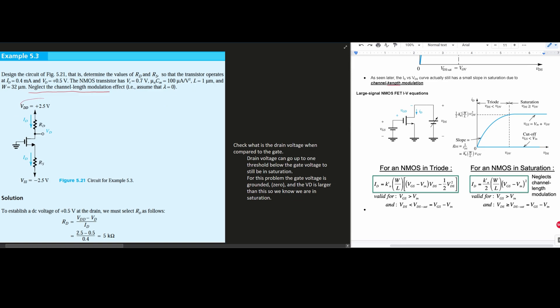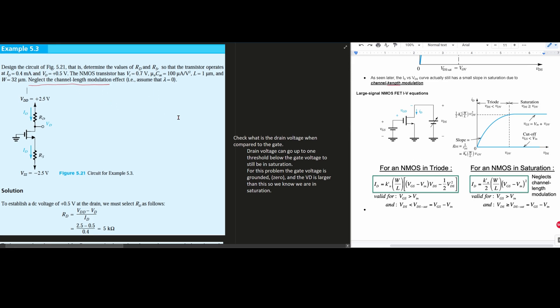Starting this off we have our circuit right here. We have VDD plus 2.5 volts, and we have our ID going in here. We need to check what is the drain voltage when compared to the gate. Drain voltage can go up to one threshold below the gate voltage to still be in saturation. For this problem the gate voltage is grounded and our VD is larger at plus 0.5 volts, so we know it's in saturation.